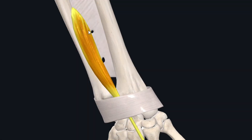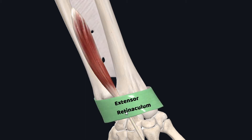After origin, the muscle fibers form a muscle belly which travels down towards the wrist, where it forms a muscle tendon. At the wrist, this muscle tendon travels deep to the extensor retinaculum of the wrist, as you can see.